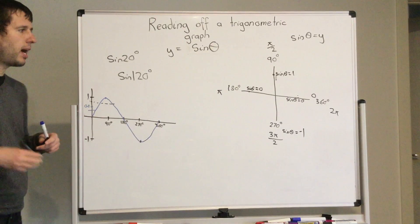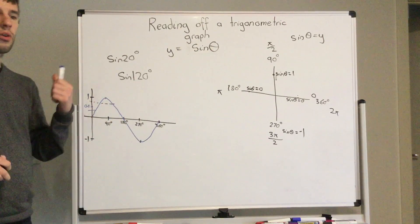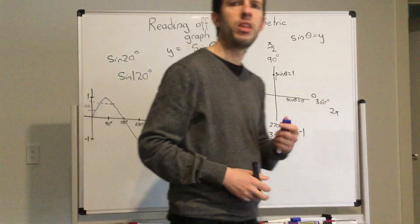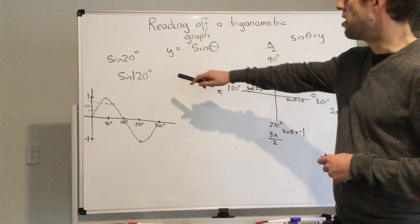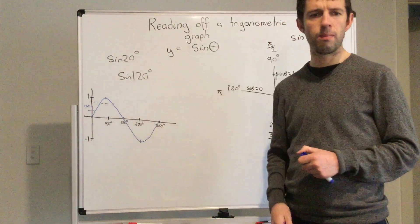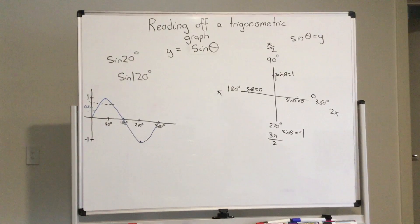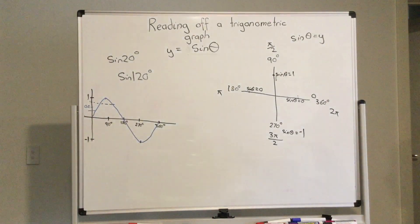So I know that sine 120 degrees is greater than sine 20 degrees. So this is where we are able to compare. Now if we get our calculators, we can confirm that.